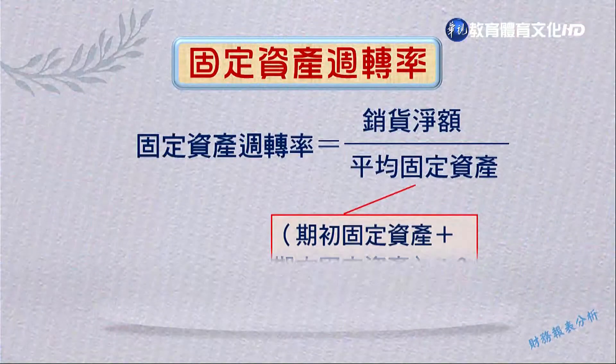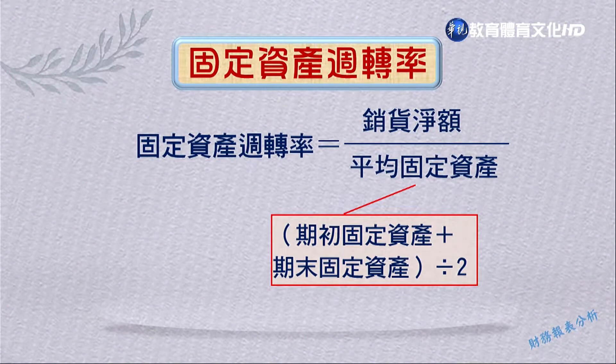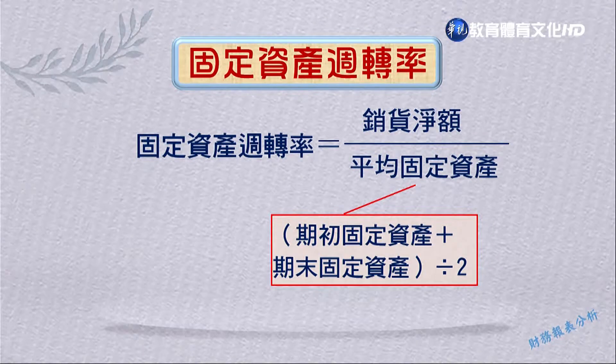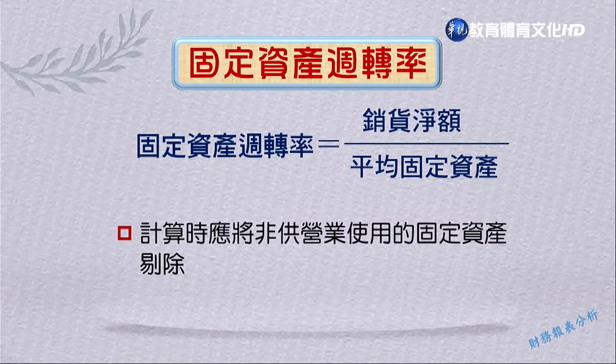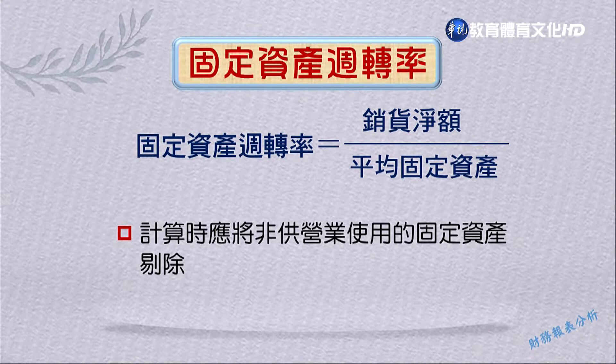固定資產使用年限的不同也會使周轉率產生變化，因此在分析固定資產時要注意使用年限及重估等問題。分母同樣可採用平均觀念，即期初加期末固定資產除以二。在計算時，通常會把非供營業使用的固定資產加以剔除，因為非供營業使用的固定資產對創造銷貨收入是沒有幫助的，剔除後能更精準衡量供營業使用固定資產與銷貨之間的關係。